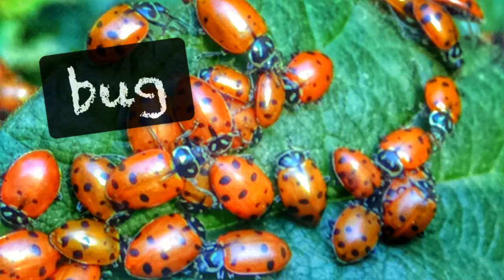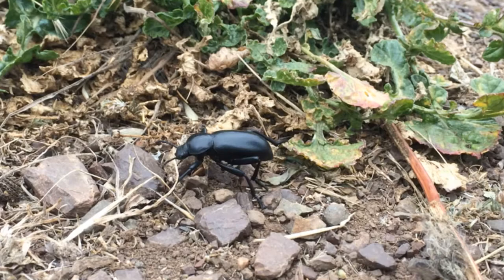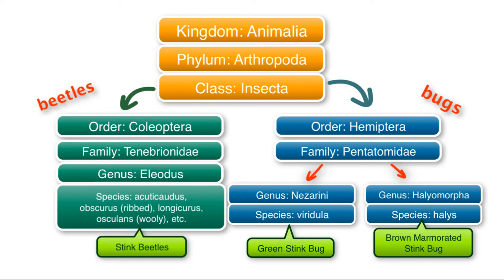Have you ever wondered about the difference between bugs and beetles, or is there any at all? We tend to give bugs beetle names and beetle bug names kind of randomly. We're going to take a look at stink beetles and stink bugs. If we look at the classification and taxonomy of these creatures, there are indeed evolutionary differences. They're common as far as being insects, but that's about where it stops, because once we reach the order classification, beetles and bugs have distinctive differences.